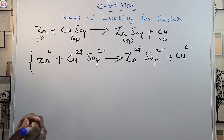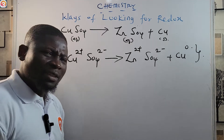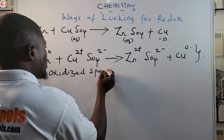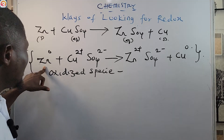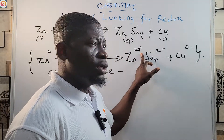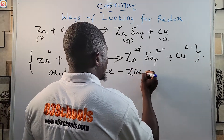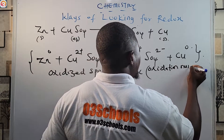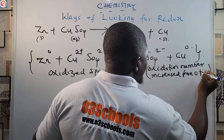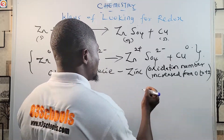Looking at zinc: its oxidation number increased from 0 to +2, so zinc is the oxidized species. Because it is the oxidized species, zinc is the reducing agent.